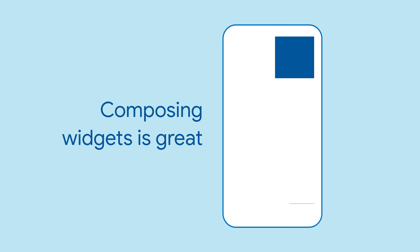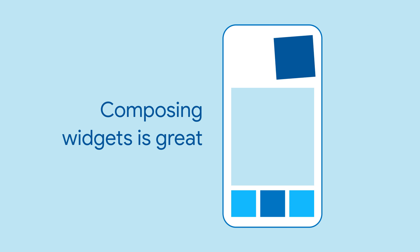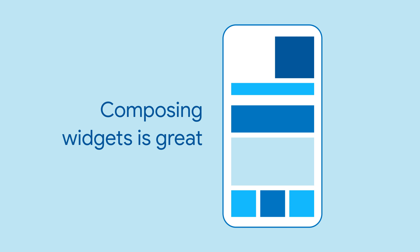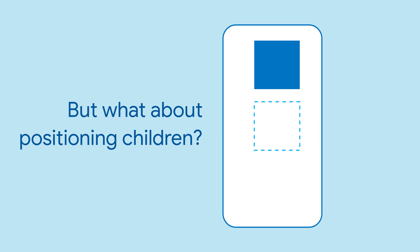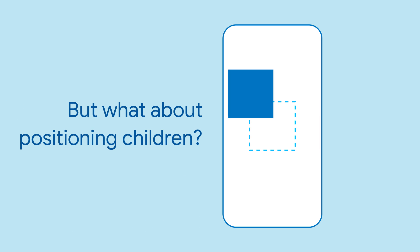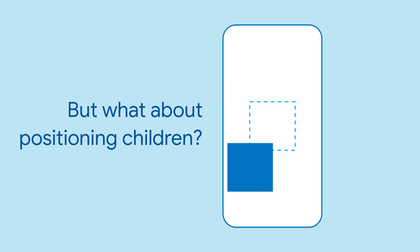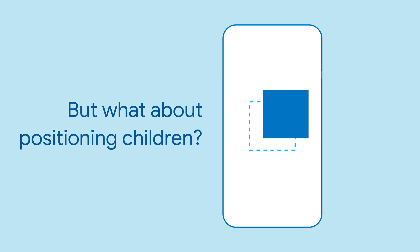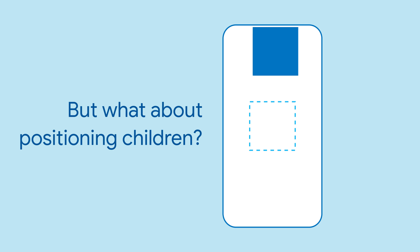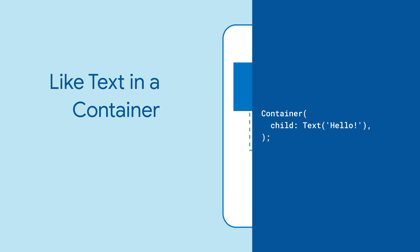Being able to compose widgets together is one of Flutter's most powerful features. But how can you specify how a child should be laid out or positioned inside its parent?